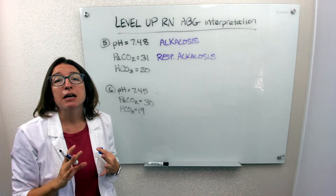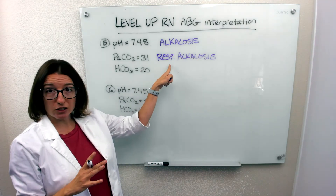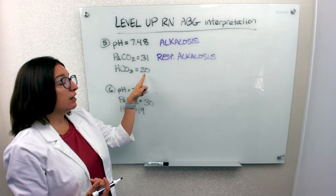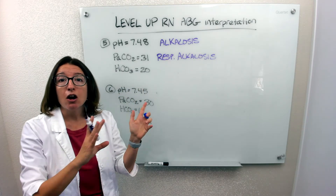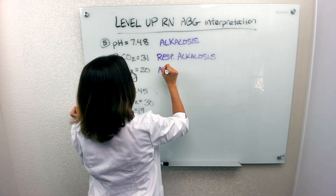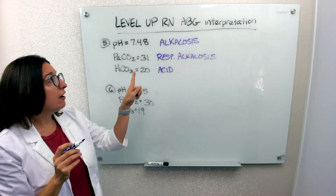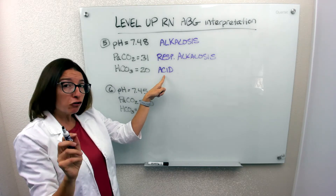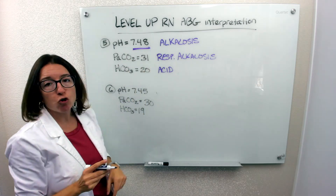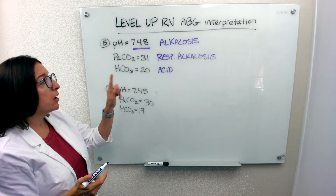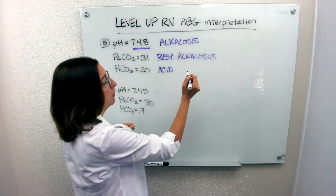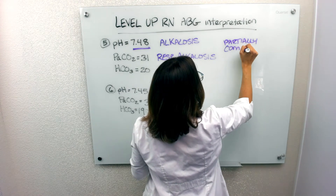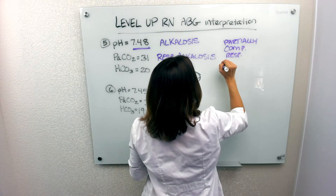Now we need to see if the metabolic system is doing anything to compensate. HCO3 should be between 22 and 26. We have an HCO3 of 20, which is out of range on the low side — so this is acidic. The metabolic system is trying to compensate, but it is not fully compensated because our pH is out of the normal range. So in this case, we have partially compensated respiratory alkalosis.